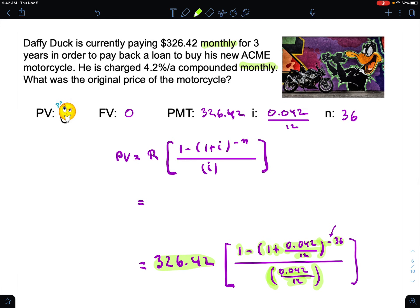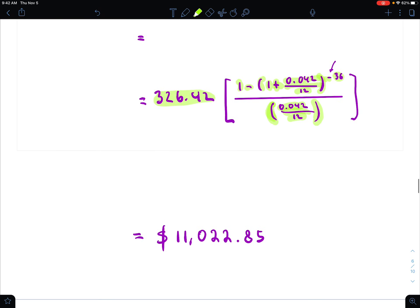If you want to know how much money he's actually paying, all you have to do is $326.42 multiplied by 36. That's how much money he paid total, and he only borrowed $11,022.85.